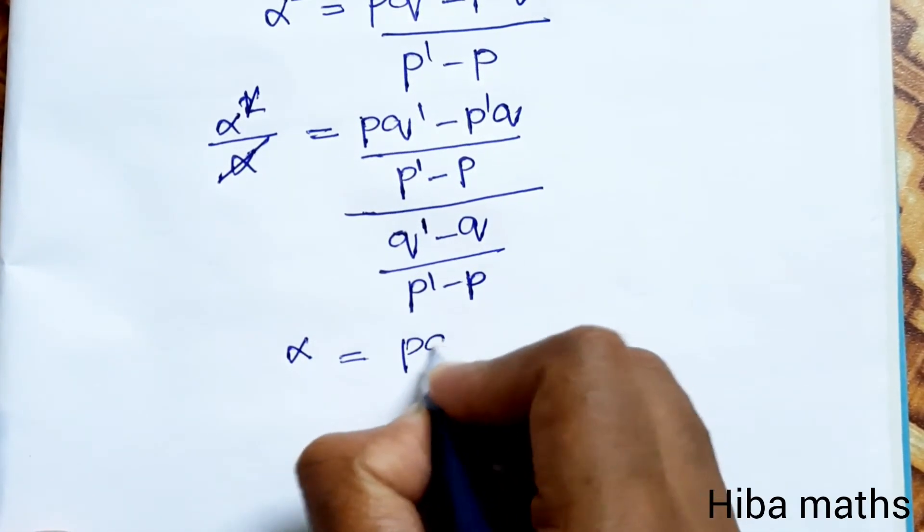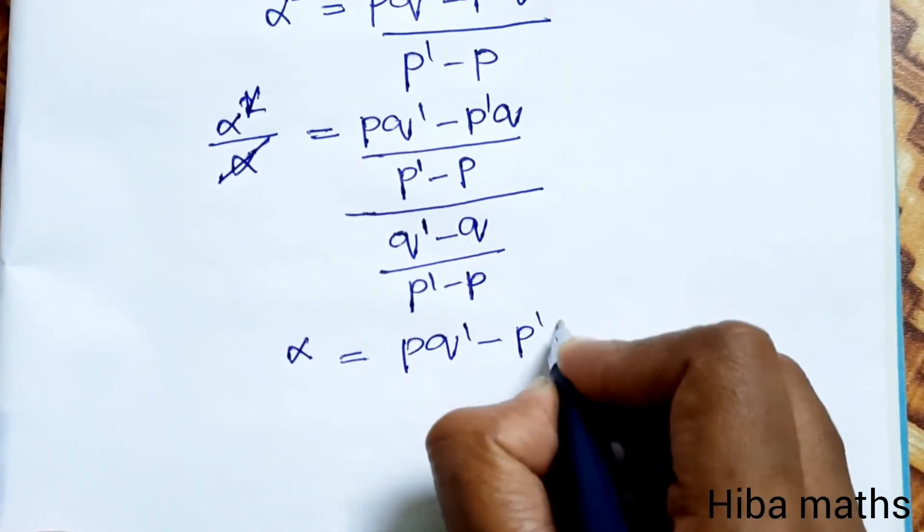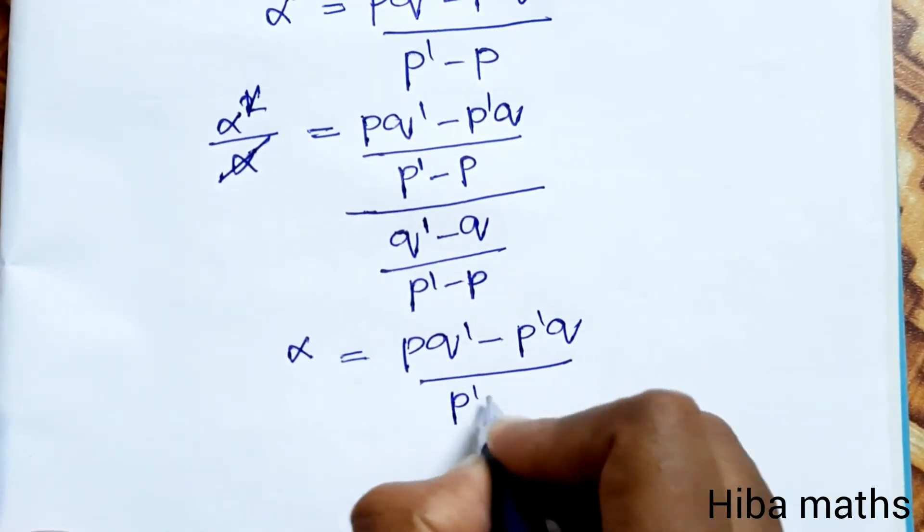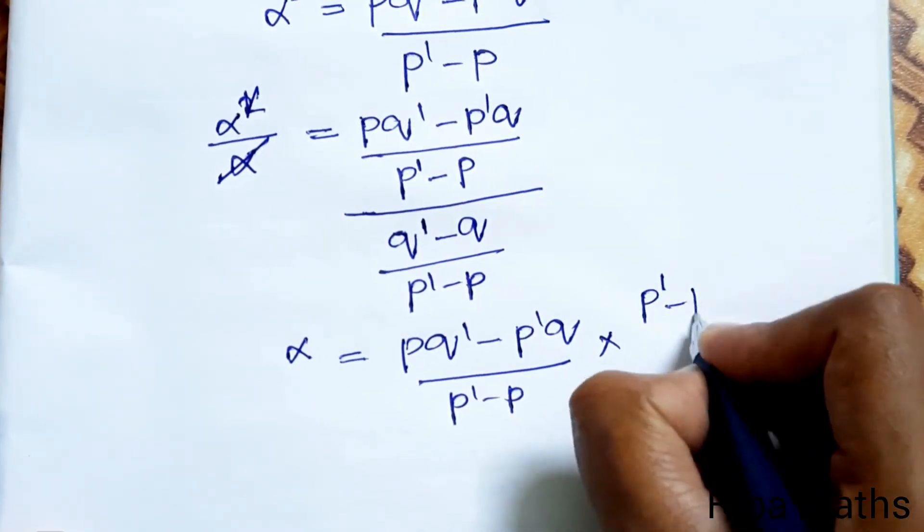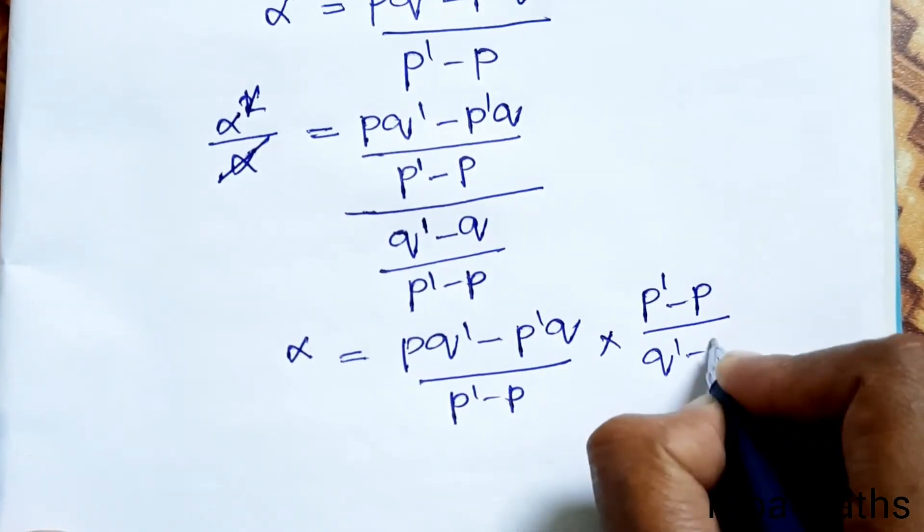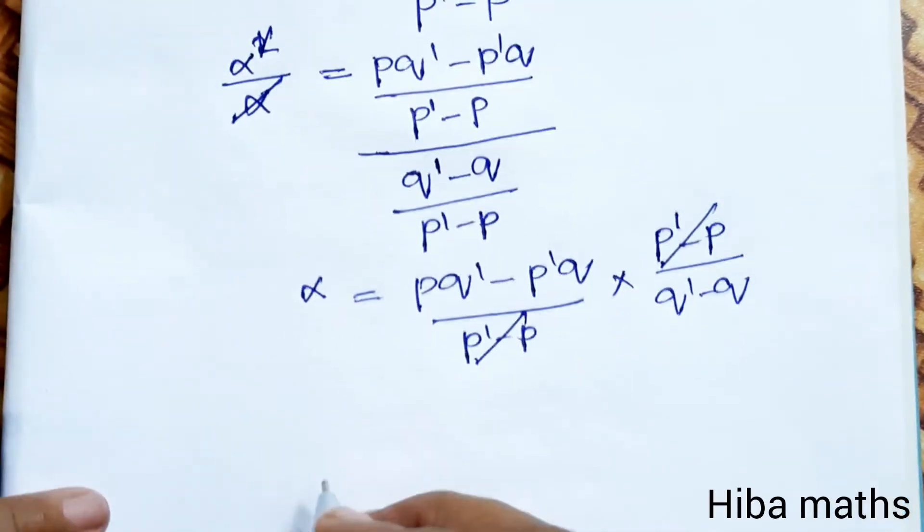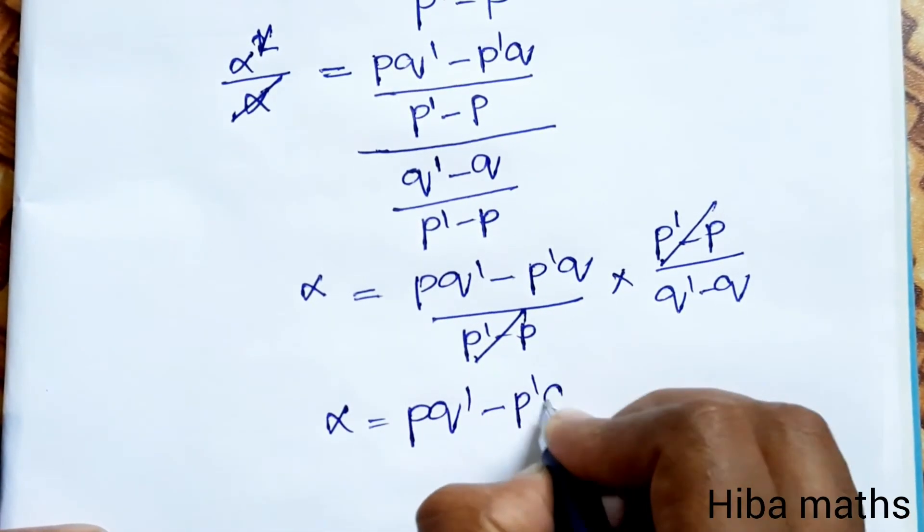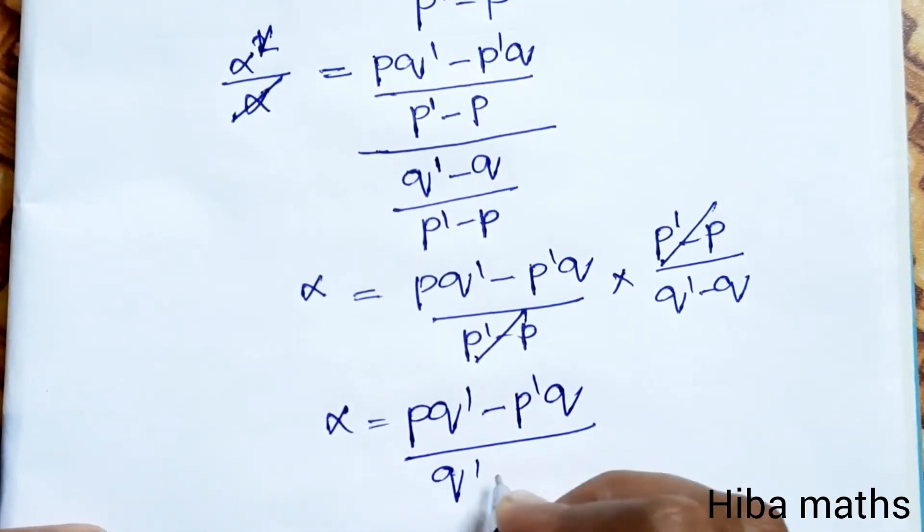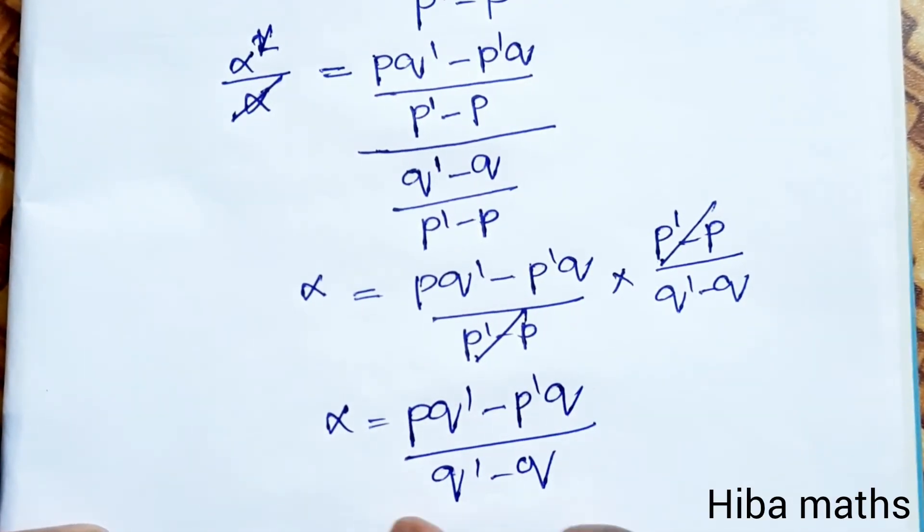Multiplying by the reciprocal: α = (PQ' - P'Q)/(P' - P) × (P' - P)/(Q' - Q). These two cancel. Therefore α = (PQ' - P'Q)/(Q - Q'). This is the second proof.